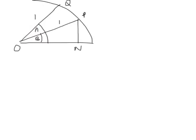So let's think about triangle OPN. We've got cosine of B is adjacent. That's ON, divided by hypotenuse, which is 1. So in other words, ON must equal cos B.